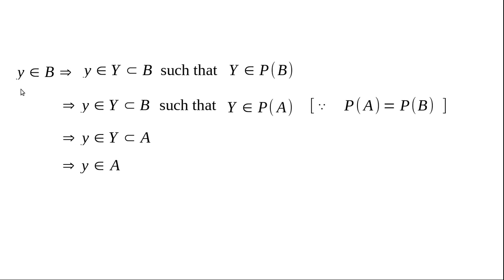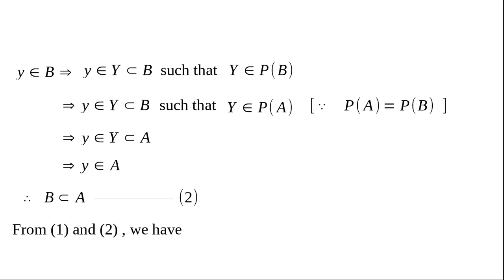Whenever y∈B then y∈A, so B⊂A — that is our second result. From the first result A⊂B and the second result B⊂A, we combine them to get A = B. The answer to question 40 is over. Write it down in your notebook.